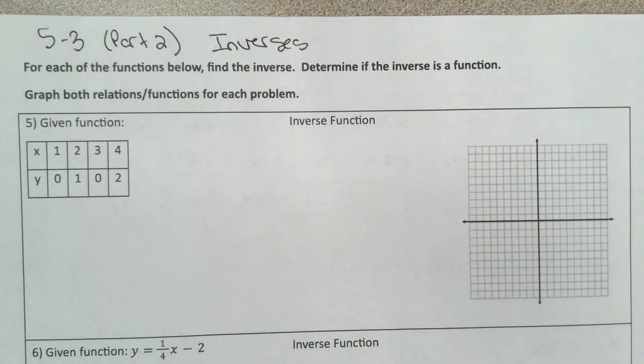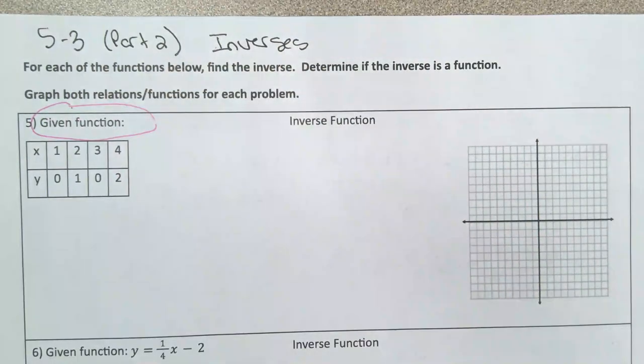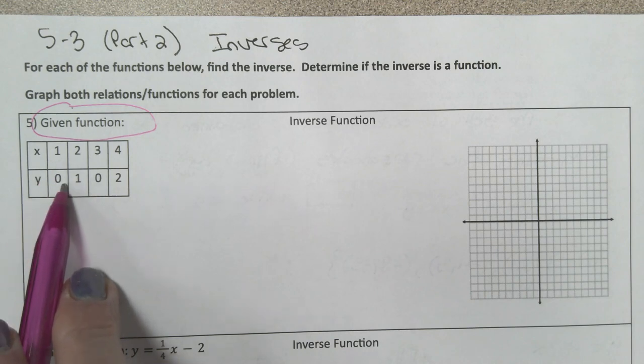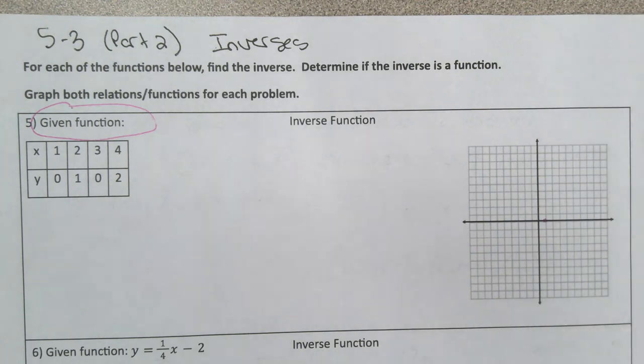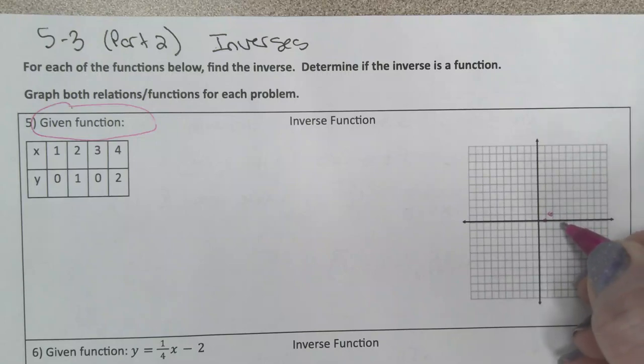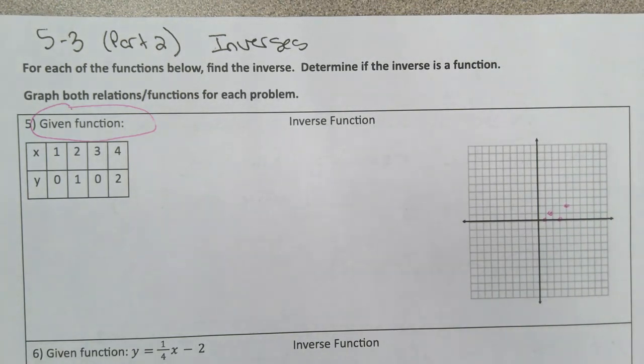I'm going to do this one in red or pink. This is just a bunch of ordered pairs, so I'm going to plot these points. That's the point 1, 0, and my eyes are getting old so this is going to be challenging. There's 2, 1, there's 3, 0, and that should be 4, 2. So all you have to do is plot those points.